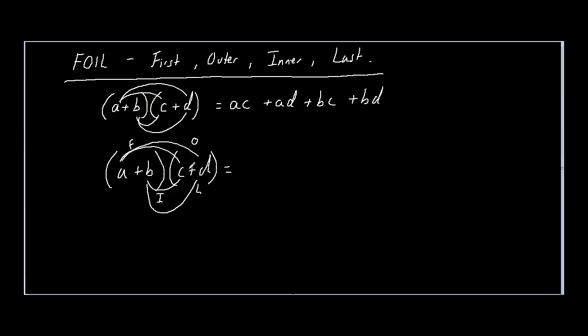So as we were saying, we'd get AC plus AD plus BC plus BD. So this is the FOIL method simplified.